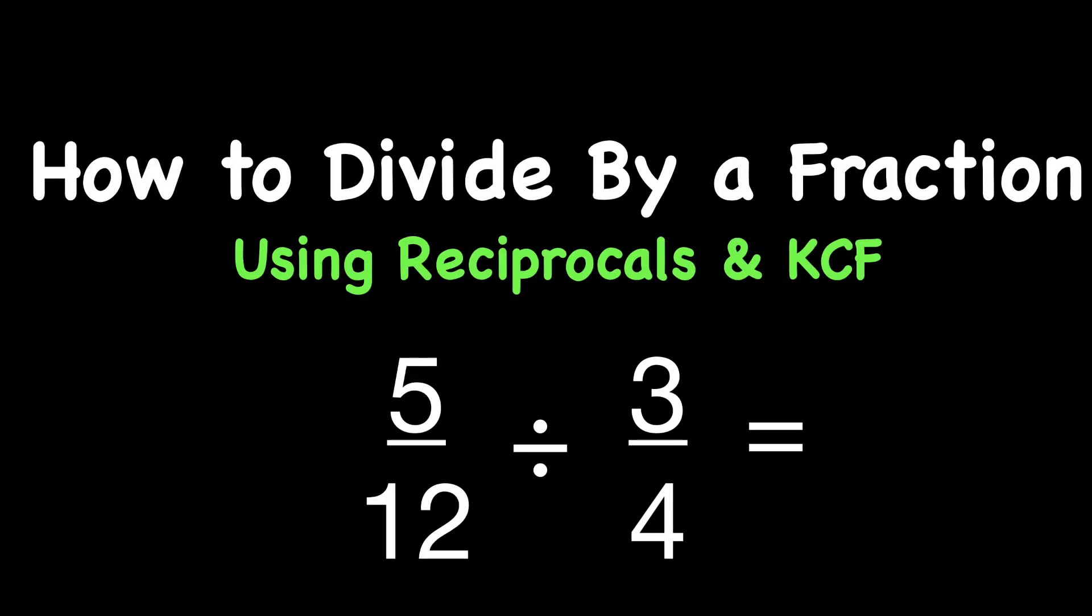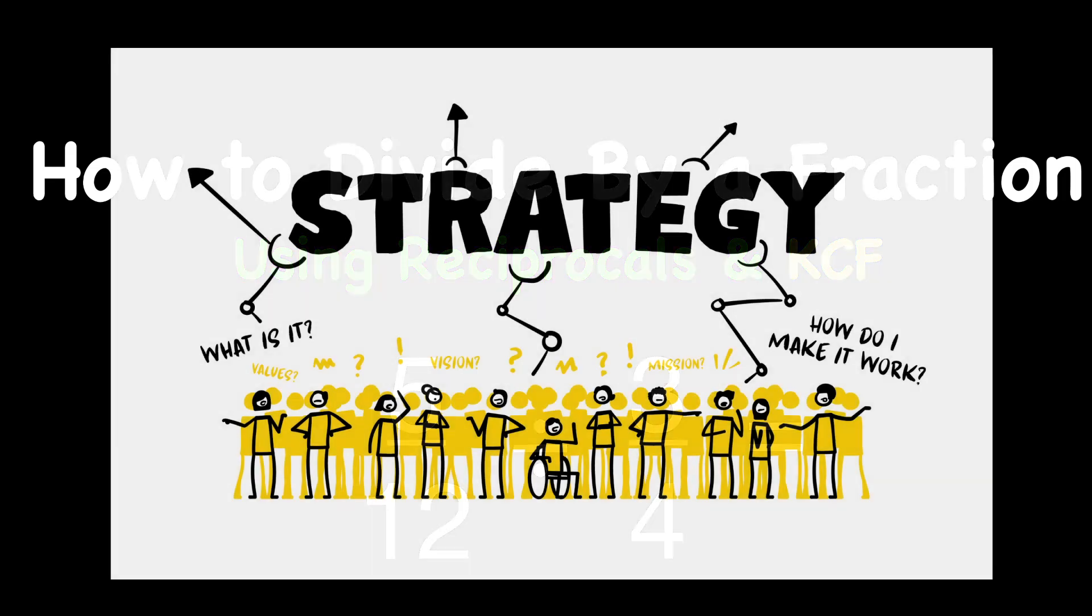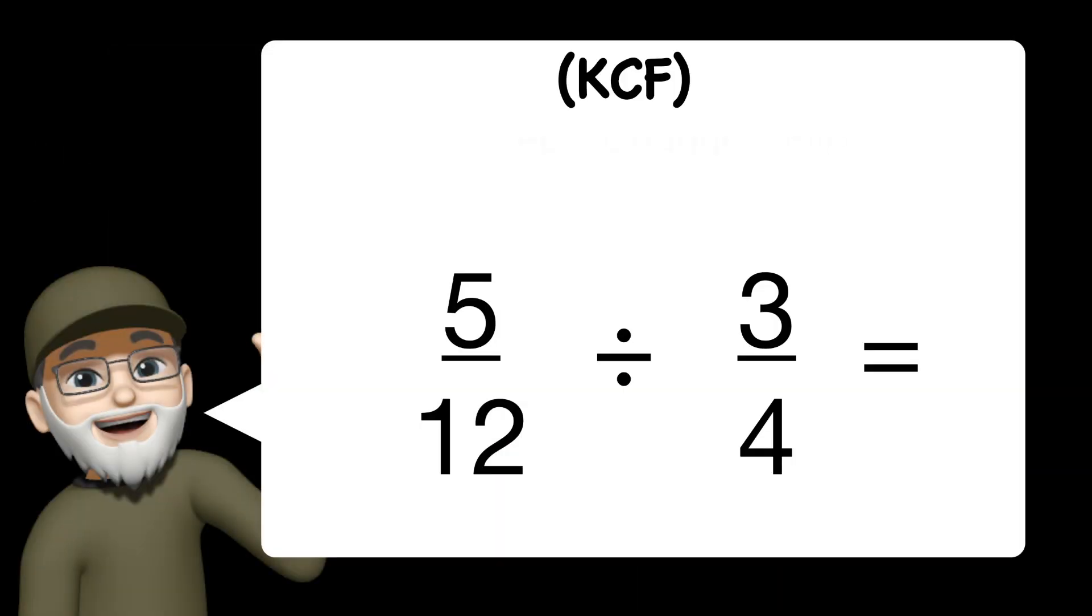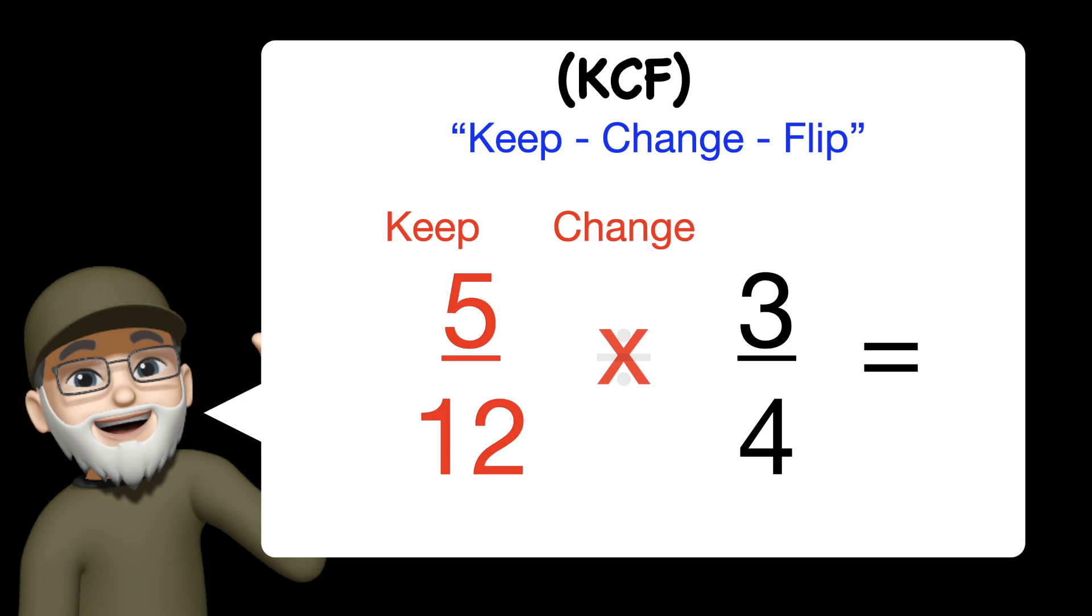The KCF is a strategy that we use for this type of problem. The K stands for keep, C stands for change, and F stands for flip. We keep the first fraction, we change the division symbol into multiplication, and we flip the second fraction into its reciprocal.